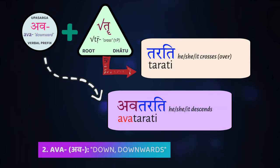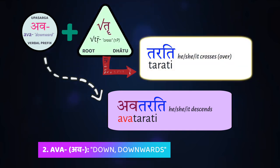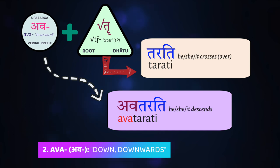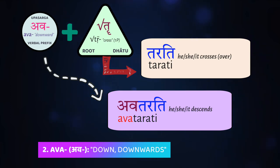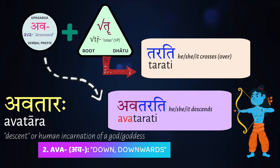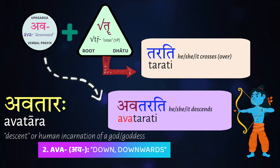There's also the prefix ava, which also has the sense of downwards. The first-class root tṛ means 'to cross,' conjugated as tarati. If you add ava before the root, it becomes avatarati, meaning 'he/she/it crosses down' — descends, like down stairs. This is where we get the common word avatāra — the descent of various Hindu gods and goddesses in human form, like Rāma, Kṛṣṇa, and so on. They descend to earth — avataranti.